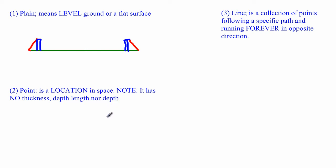A point is something we cannot touch. It is simply a location. It has no thickness, so you can't touch it, lift it up, or measure it. If I make a dot on the screen, that is not a point — it is a dot, or most commonly called a period.